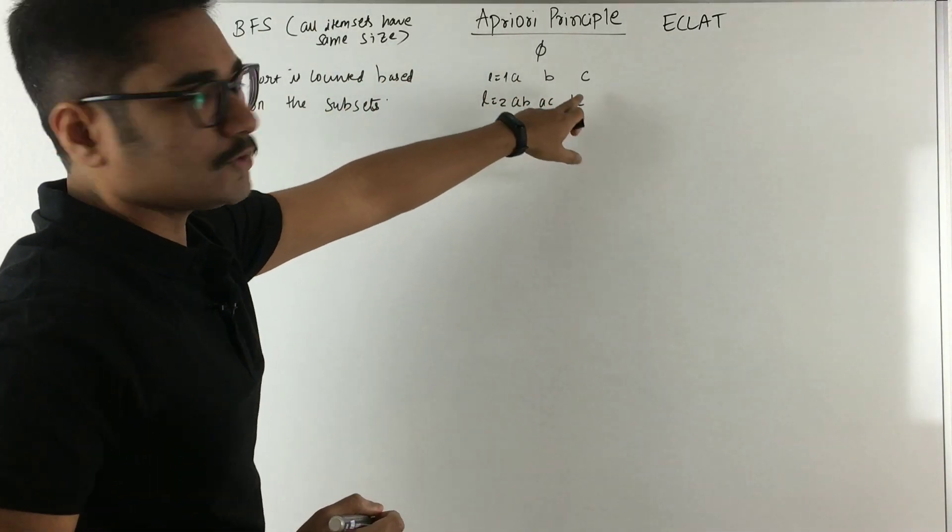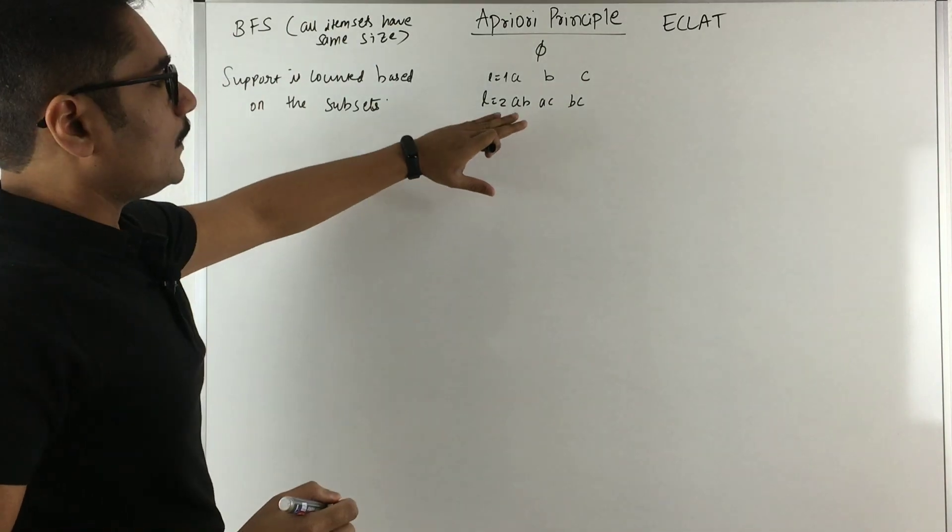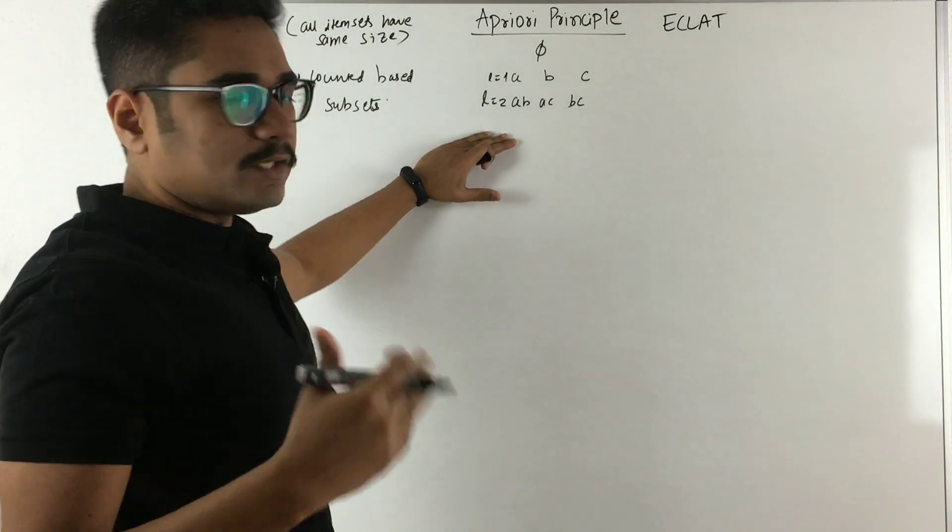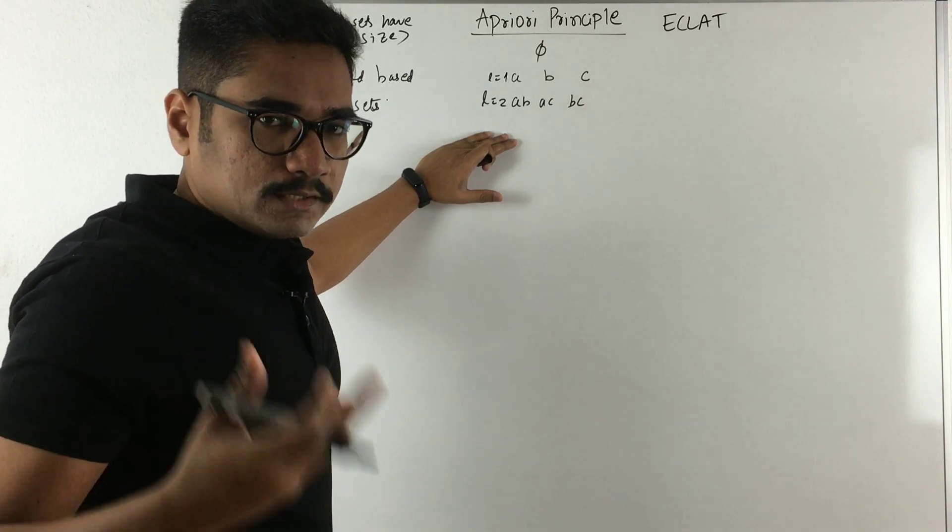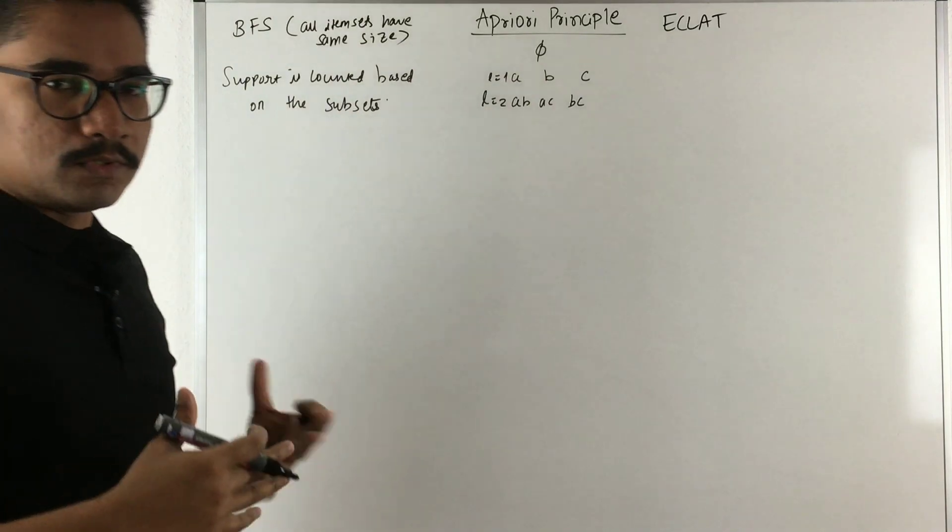With the subsets, you count the support of each of these from a set of transactions. That will be more clear when we deal with a lattice structure. That activity will be in some other videos. In today's video, let's see some of the terms and some of the principles.